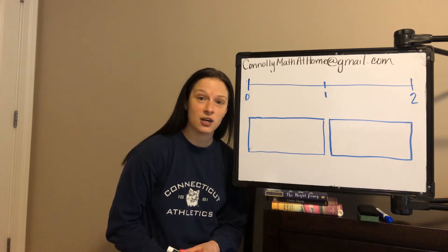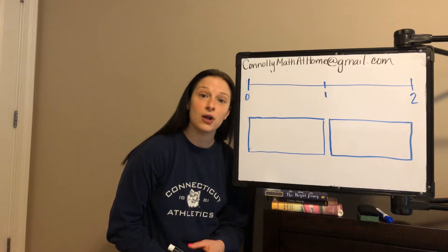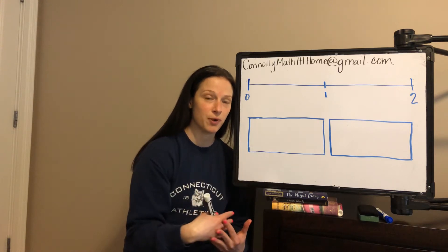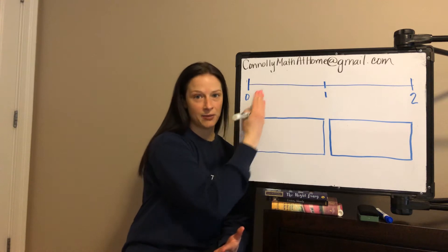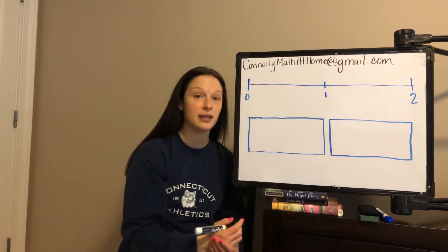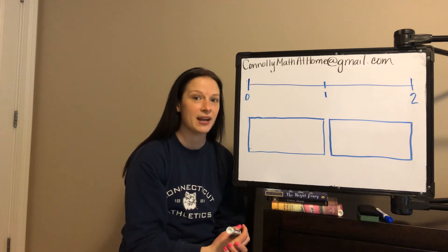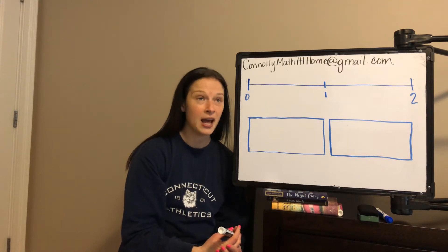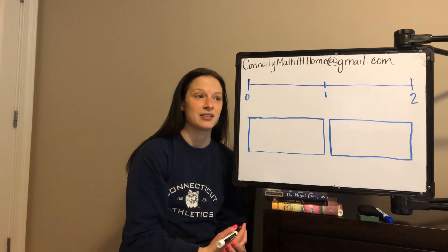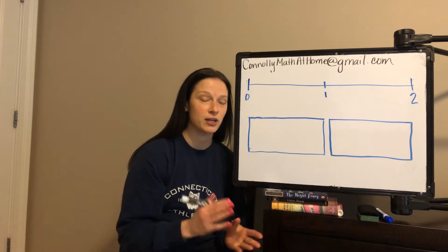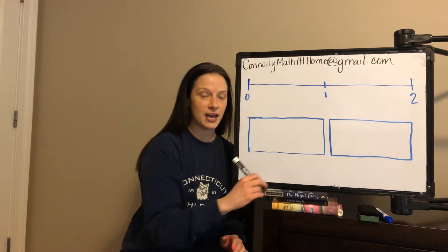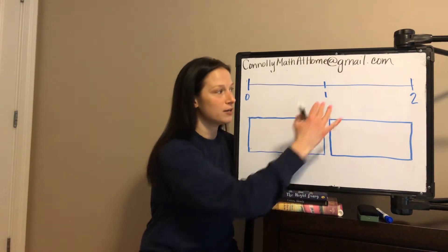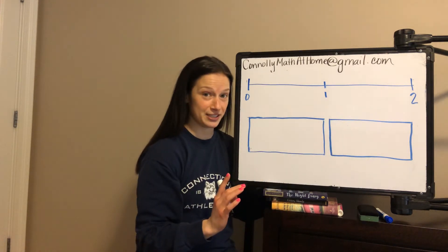In the last video that I made, I talked about representing fractions on a number line, and all of those fractions were between zero and one. So we just had one whole that we were talking about. But what happens when our fraction is more than one whole? This comes up in third grade, fourth grade, and continues into fifth grade. I'm going to go over what's happening on an area model representation, and at the same time help you represent it on the number line.